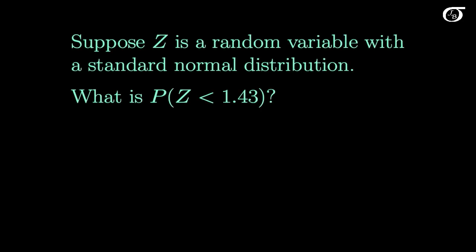Suppose that Z is a random variable with a standard normal distribution, and we want to know the probability that Z takes on a value less than 1.43. First of all, note that this is exactly the same as if we were to say the probability that Z is less than or equal to 1.43.